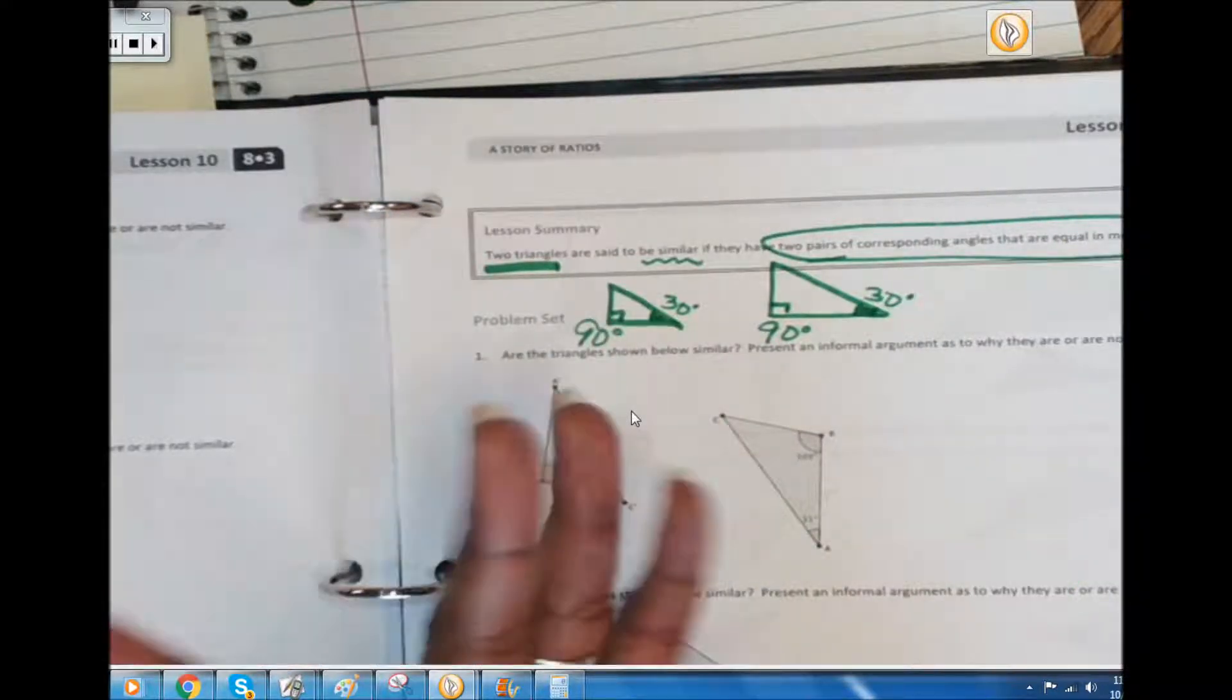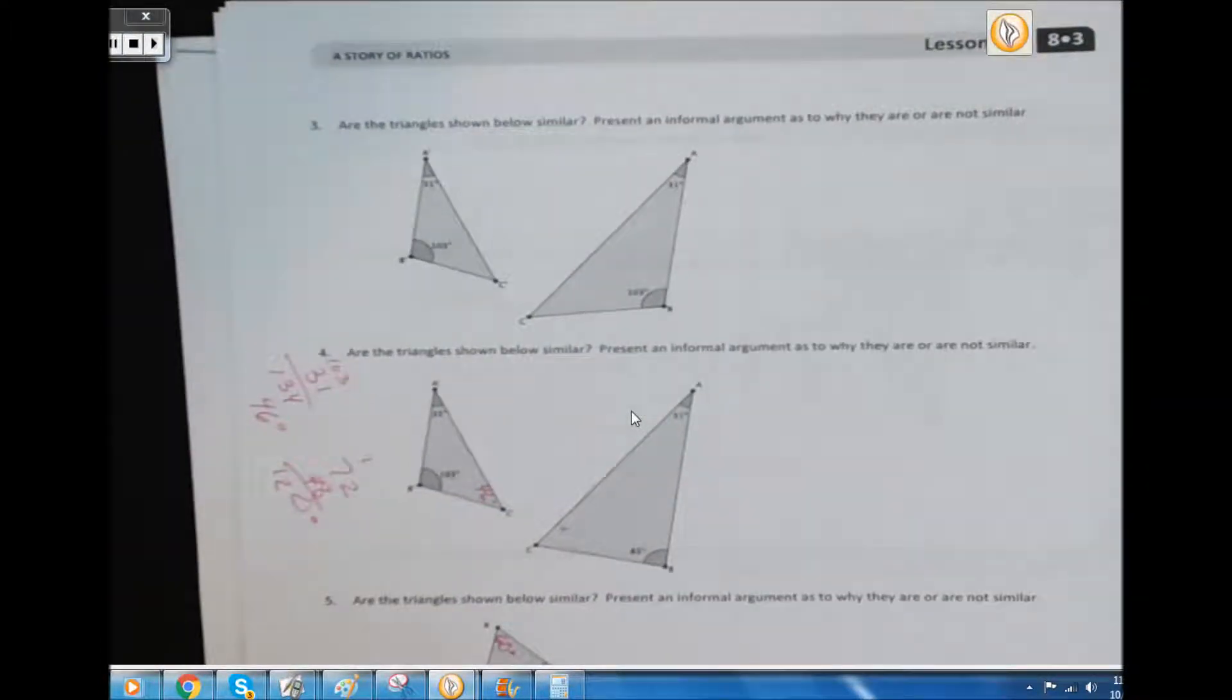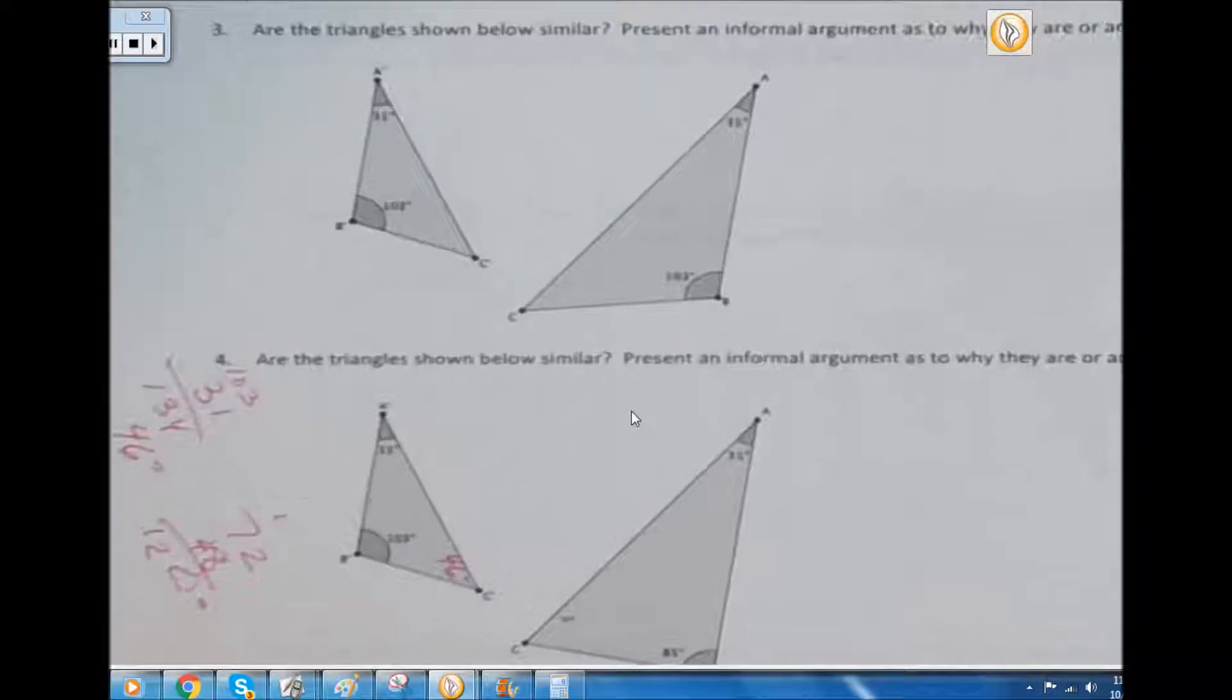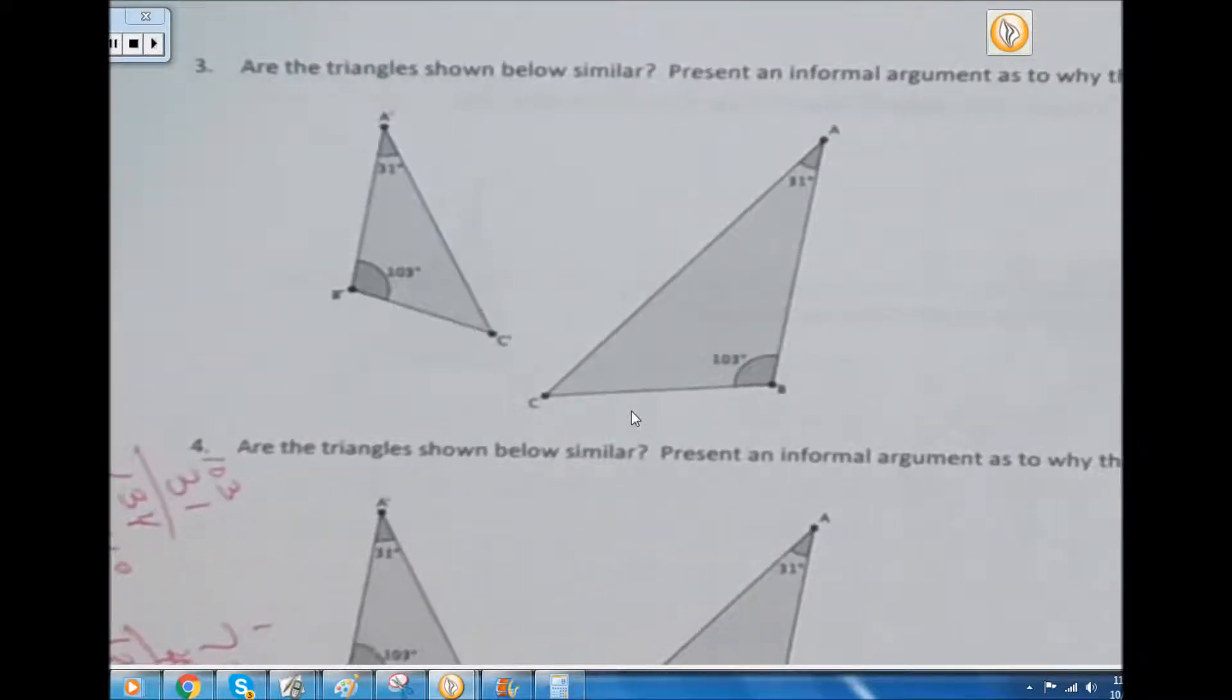Sounds a little bit complicated but it's really not, watch. All right, look on page 52 at the top. At the top of page 52 there's number three and they want us to decide if these two triangles are similar.